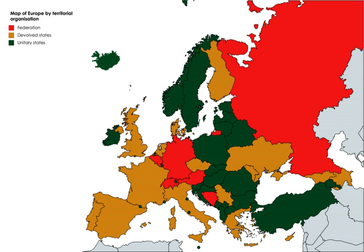In Europe, federalist is sometimes used to describe those who favor a common federal government, with distributed power at regional, national and supranational levels. Most European federalists want this development to continue within the European Union. European federalism originated in post-war Europe; one of the more important initiatives was Winston Churchill's speech in Zurich in 1946. In the United States, federalism originally referred to belief in a stronger central government. When the U.S. Constitution was being drafted, the Federalist Party supported a stronger central government, while anti-federalists wanted a weaker central government. This is very different from the modern usage of federalism in Europe and the United States.